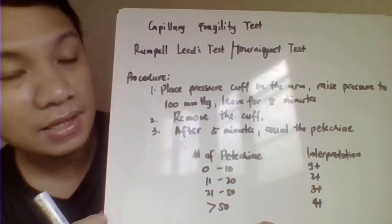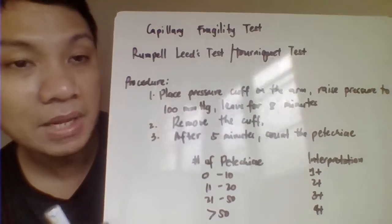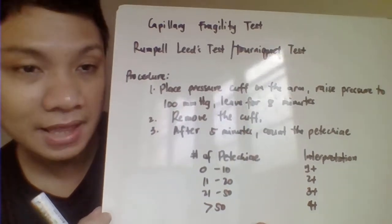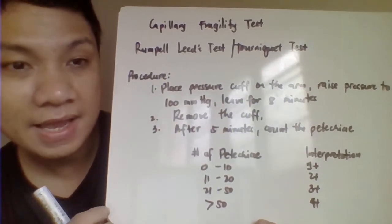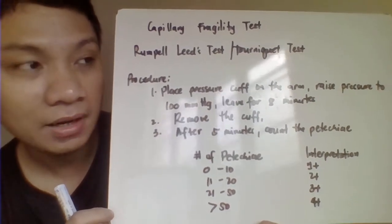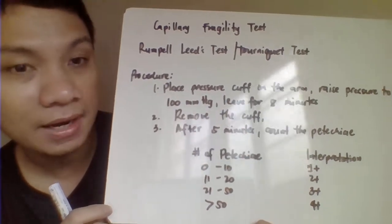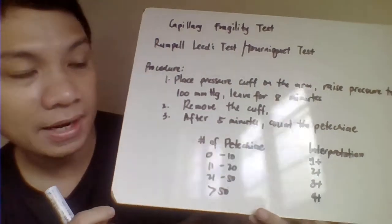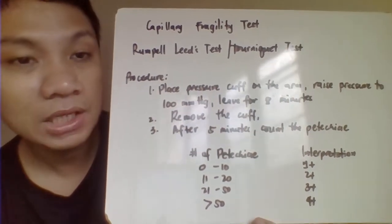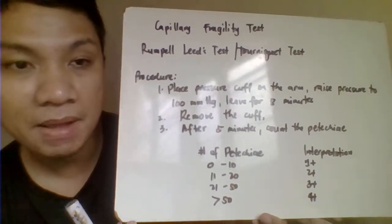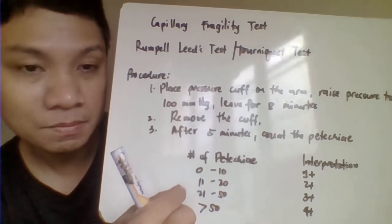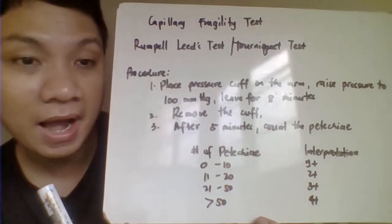The procedure for the capillary fragility test uses the Rumpel-Leede test, or simply the tourniquet test. You need to apply a pressure cuff on your arm and inflate it to 100 mmHg, then allow it to stay for 8 minutes. Throughout those 8 minutes, you need to maintain the pressure at 100 mmHg — control the screw to make sure the pressure does not drop.